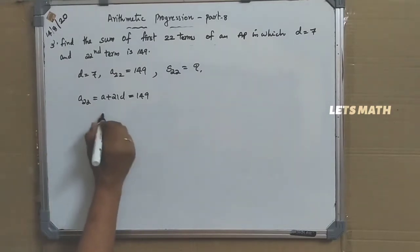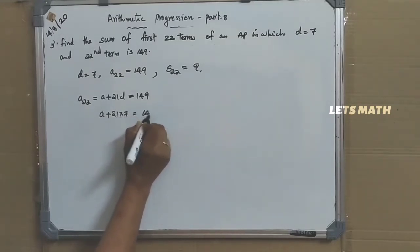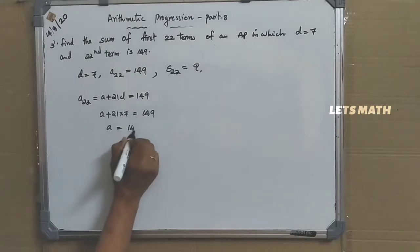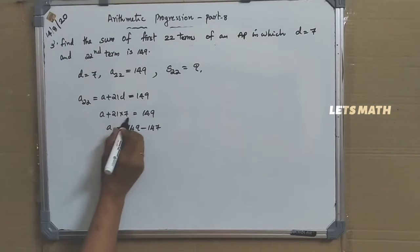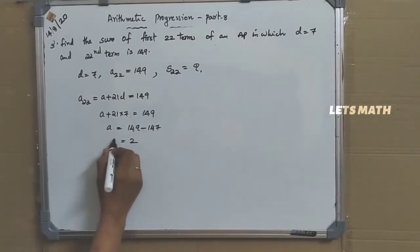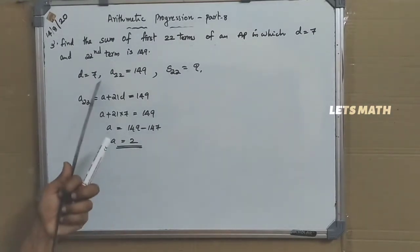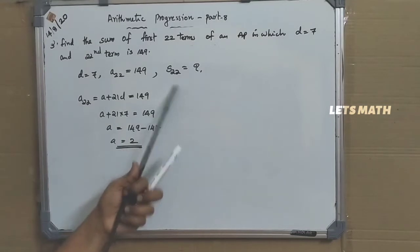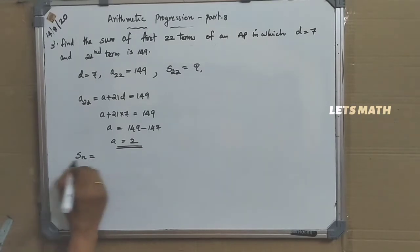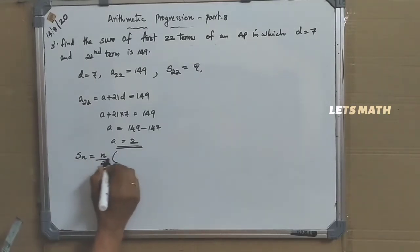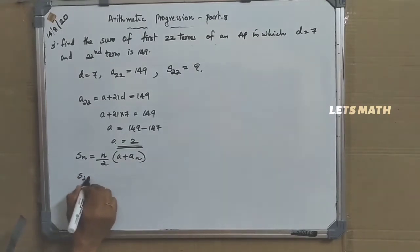A is unknown, so A plus 21 into 7 equal to 149. A equal to 149 minus 147. Since 21 into 7 is 147, A equal to 2. Now if you have A, D, and the number of terms, you can find S22.